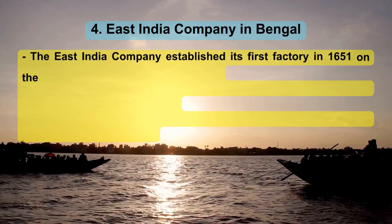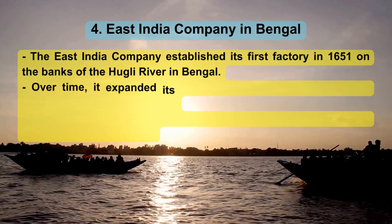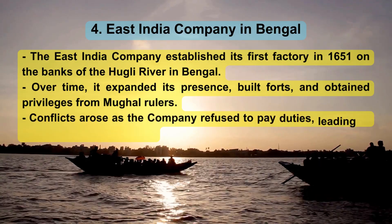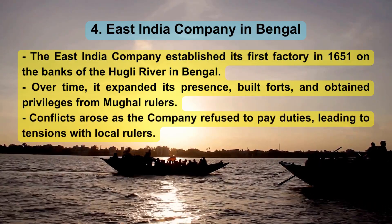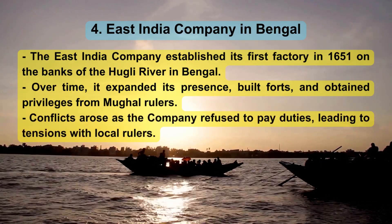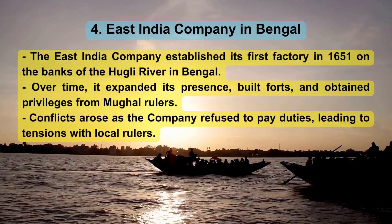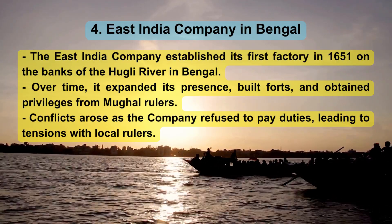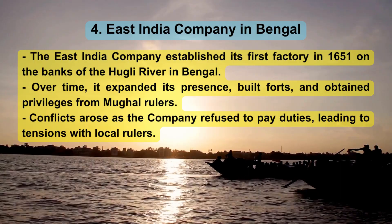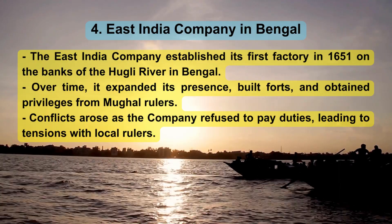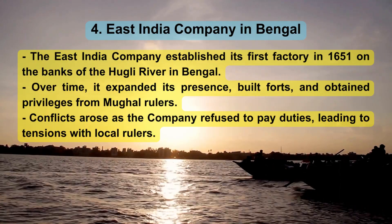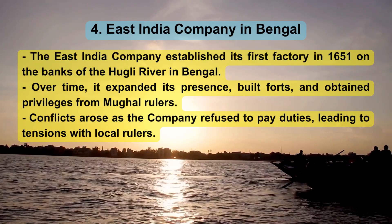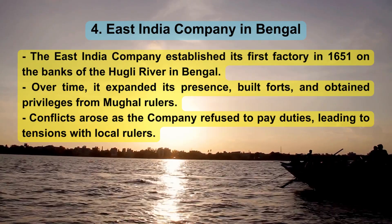East India Company in Bengal. The East India Company established its first factory in 1651 on the banks of the Hooghly River in Bengal. Over time, it expanded its presence, built forts, and obtained privileges from Mughal rulers. Conflicts arose as the company refused to pay duties, leading to tensions with local rulers.